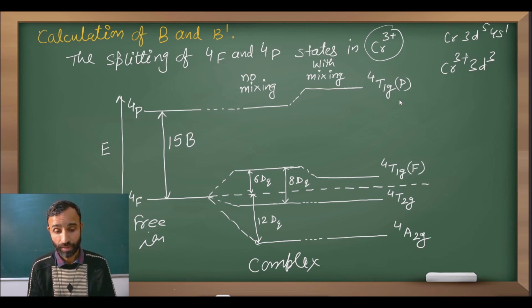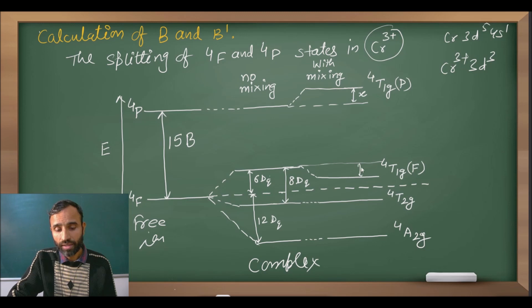When T1g of F is closer to T1g of P, they interact and because of that interaction, energy of the lower energy state decreases and energy of the higher energy state increases by some amount. Let us say X is the amount by which it increases. By the same amount it will decrease.